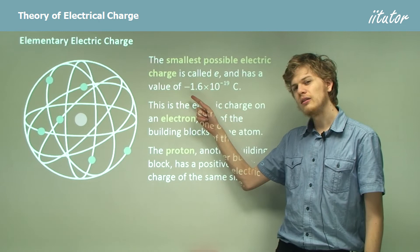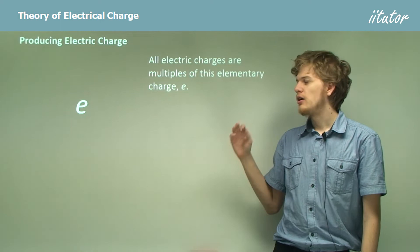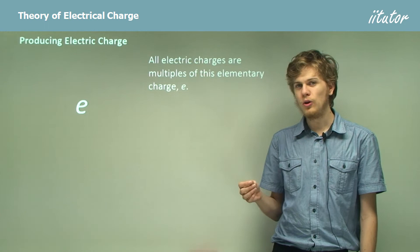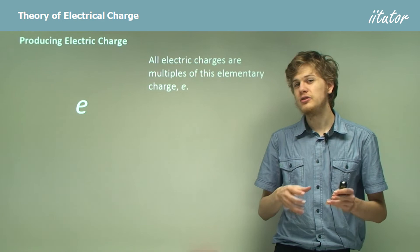All electric charges are just little units of this charge all added together. That is, all electric charges are multiples of the elementary charge. If you have exactly one coulomb, that's actually a whole bunch of elementary charges added up together, billions and billions of little elementary charges, until we reach a charge of one coulomb.